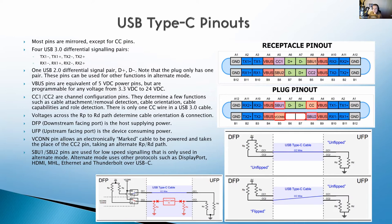USB-C offers a significant advantage: with alternative mode we can push other protocols over USB 3.0, like DisplayPort, HDMI, MHL, Ethernet, and even Thunderbolt. By using those data pins it negotiates back and forth with the downstream and upstream provider — what USB 3.0 calls the downstream facing port and the upstream facing port.